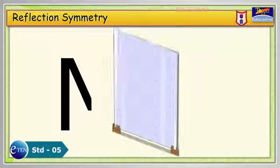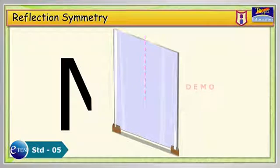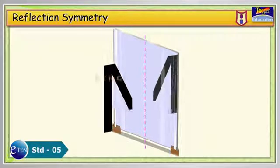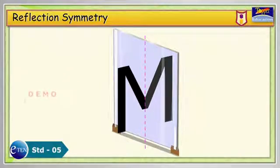An axis of symmetry essentially behaves like a mirror. In place of the axis, if we place the mirror, then we should get the same shape. Let us look at an example.